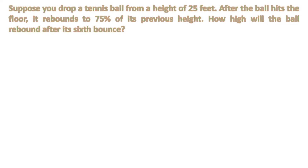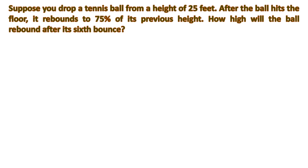Now let's have another example. Suppose you drop a tennis ball from a height of 25 feet. After the ball hits the floor, it rebounds to 75% of its previous height. How high will the ball rebound after its sixth bounce? So let us list the given to figure out what sequence applies. So 25 is the starting height, and the next terms will be multiplied by 75% or 0.75. So 25 times 0.75 is 18.75, then 18.75 times 0.75 gives the third term, which is 14.0625.